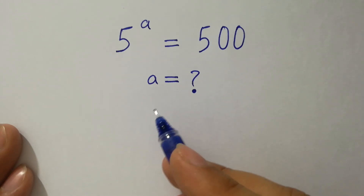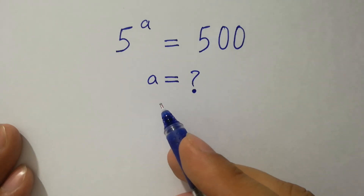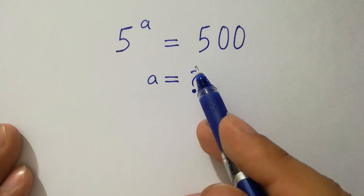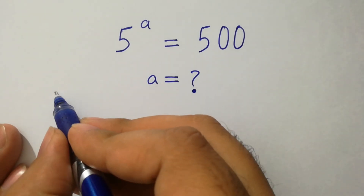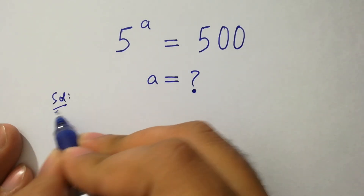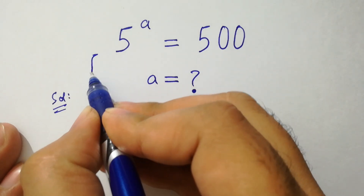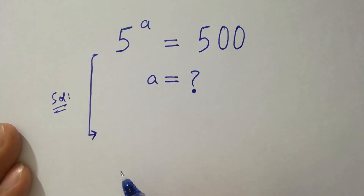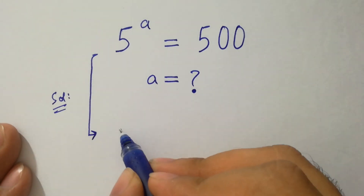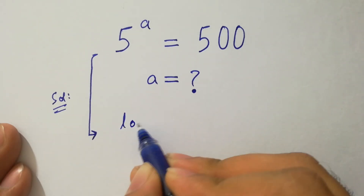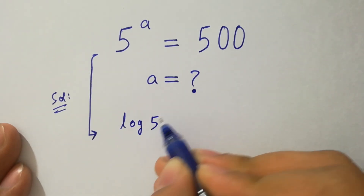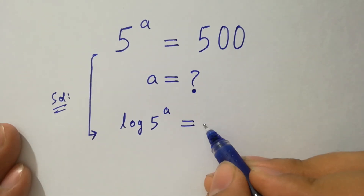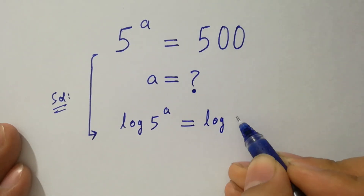Hello friends, find the value of a if 5 to the power a equals 500. Let's have a solution. To solve this problem, first of all take log on both sides: log 5 to the power a equals log 500.